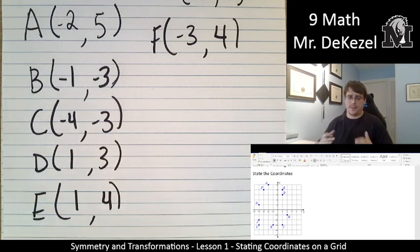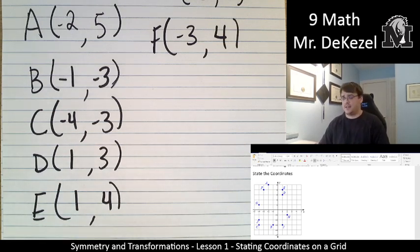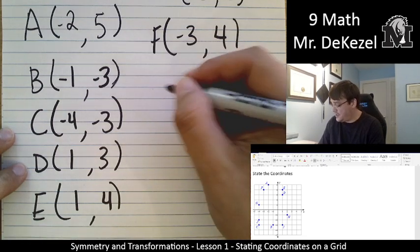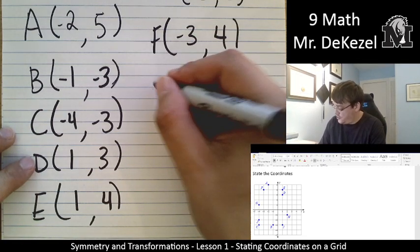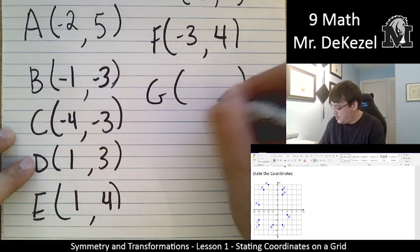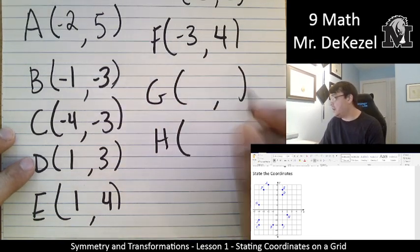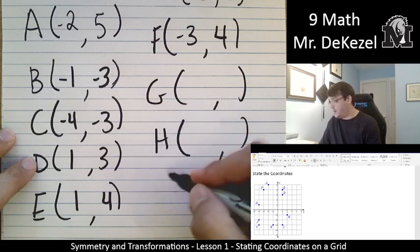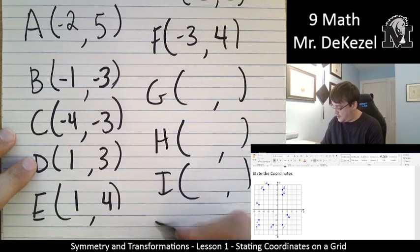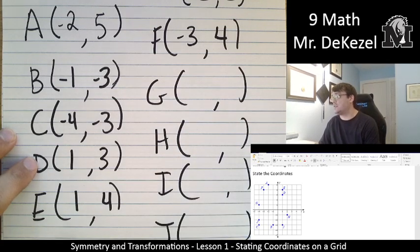So sometimes it's a bit confusing where the negatives go. But if you're going to the left, it is negative for the x value. If you're going down, it is negative for the y value. Let's continue here.